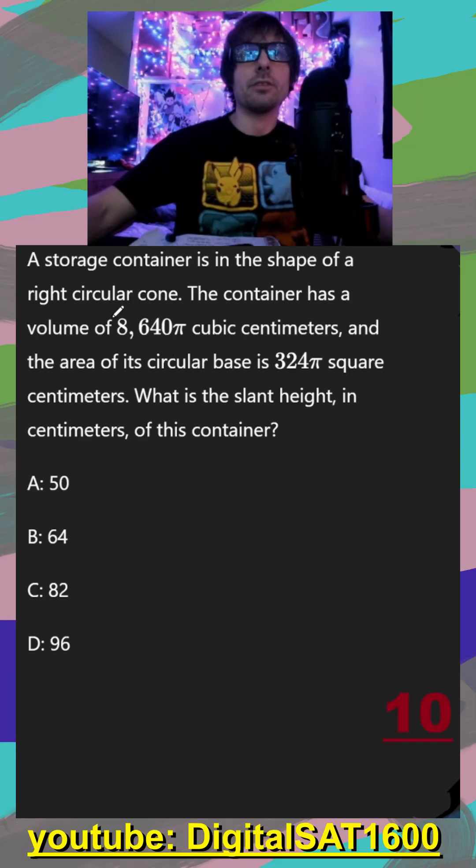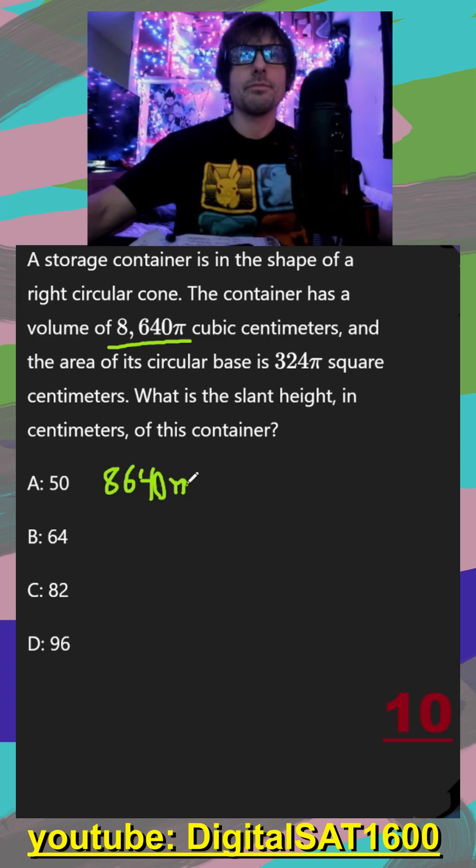A storage container is in the shape of a right circular cone. The container has a volume of 8640π. So we can pause right there. The volume of a cone is on our equation sheet. And if they ever give us a value for that, we always want to set it equal. So we can say that 8640π is equal to the volume of the cone equation. Again, on our equation sheet, which is one third πr² times h, our height and our radius.